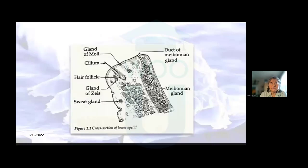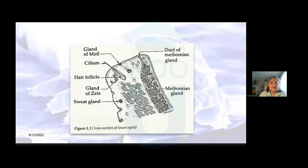If we take a look at a nice line-and-pencil drawing of our lid margin, we have the cilium — the lash — where our demodex folliculorum friends are generally found, and the brevis in the glands of Moll and Zeis. Of course the other juiciest oil gland are the meibomian glands, and we will get host demodex brevis there.